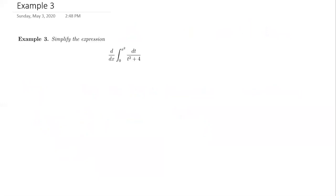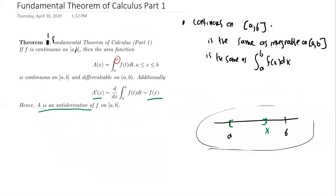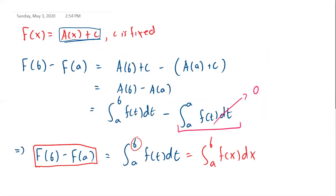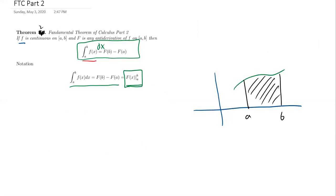Now I want to show you an example of applying the first part of the fundamental theorem of calculus — specifically, that the derivative of the area function is f of x. Really the most important application is that the area function is an antiderivative of f, which of course we use in the fundamental theorem of calculus. That's how we derived this formula, using the fact that the area function is an antiderivative of f.